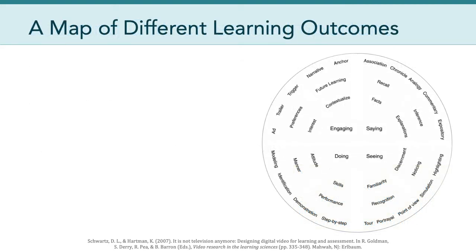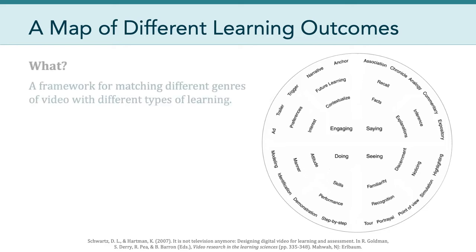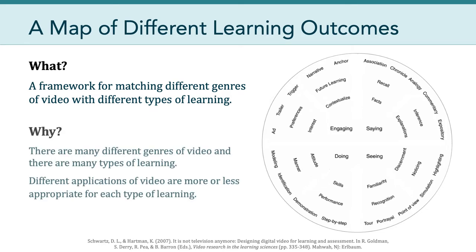Building on that idea, Schwartz and Hartman developed a map of different learning outcomes to help educators use video more effectively. It's a framework for matching different genres of video with different types of learning. They created it because there are many different types of video and many different types of learning, and different applications of video are more or less appropriate for each type. They wanted to provide structure to help people make more educated decisions about how to use video in support of a certain learning outcome.